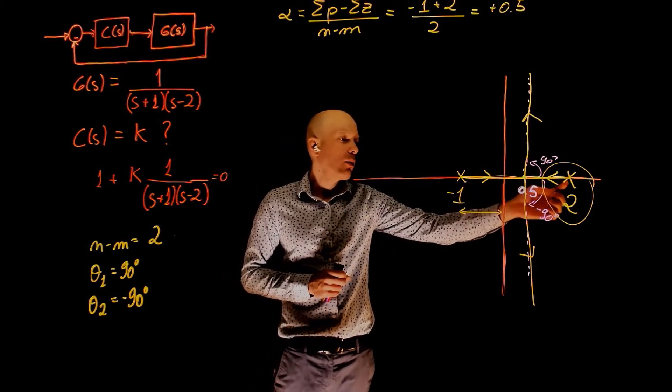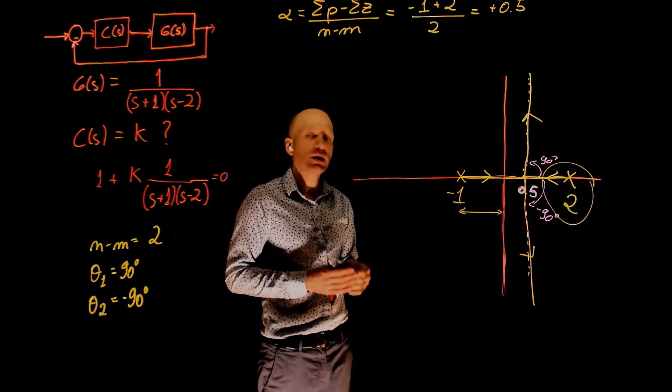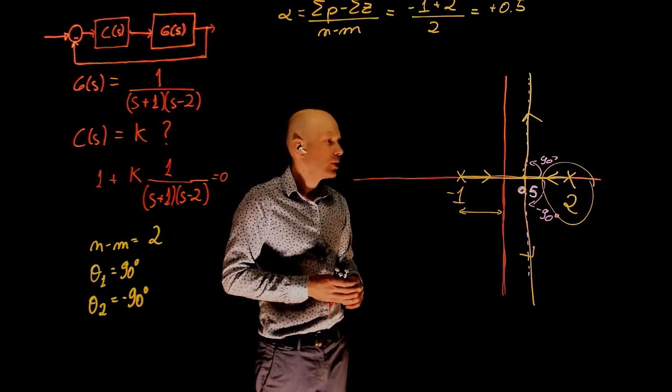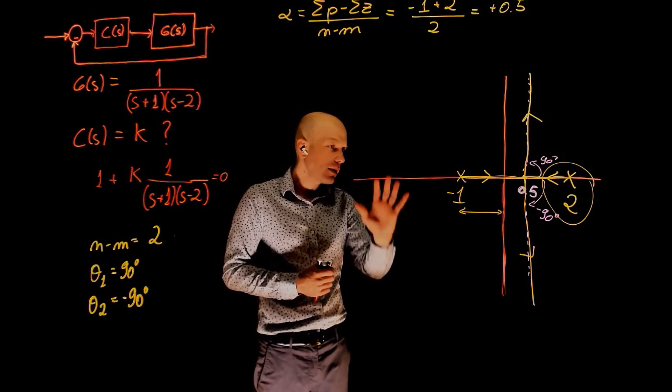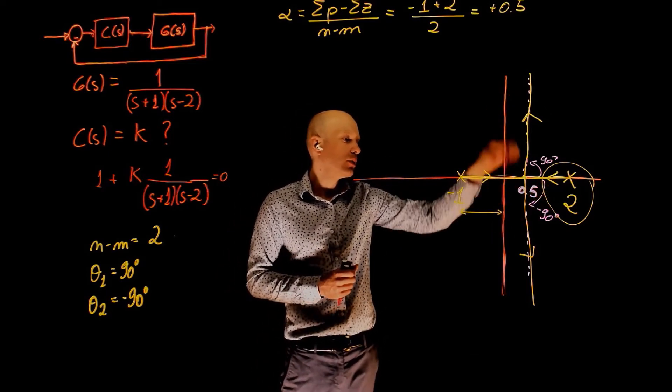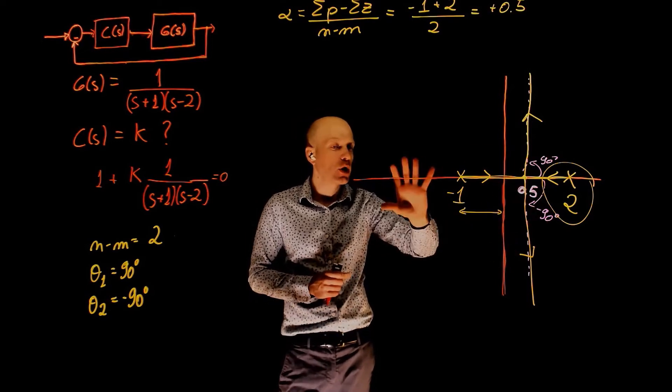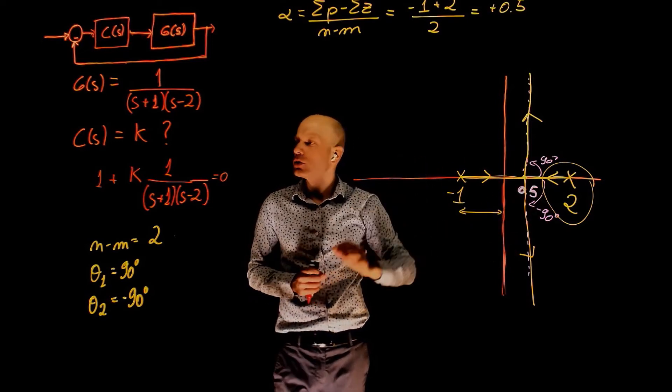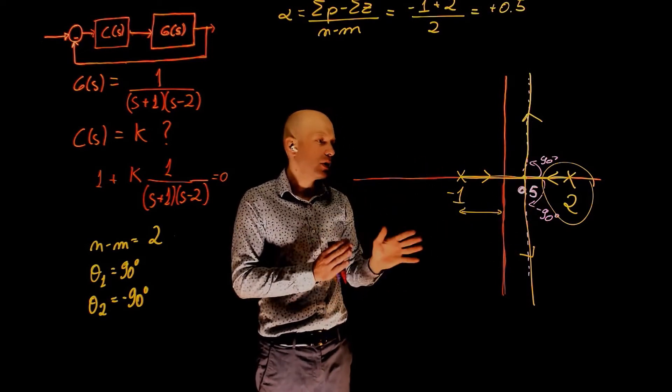This pole will eventually come to that zero, and then the system will become stable. So from this simple analysis, we can see that if we add more zeros here, this pole is not going to plus or minus infinity anymore. It will have to come to meet that zero. So let's think about a different controller to make the system stable.